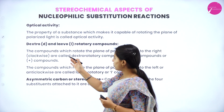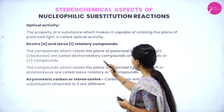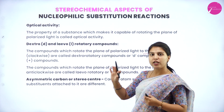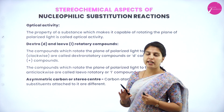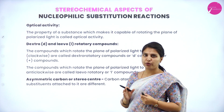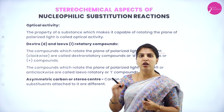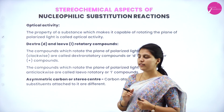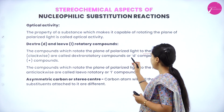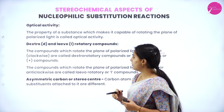What is dextro and levorotatory? The compounds which rotate the plane polarized light to the right side — that is, in a clockwise direction — are called dextrorotatory compounds. Any compound that turns clockwise or to the right side is called dextrorotatory, and it is designated as d or plus.